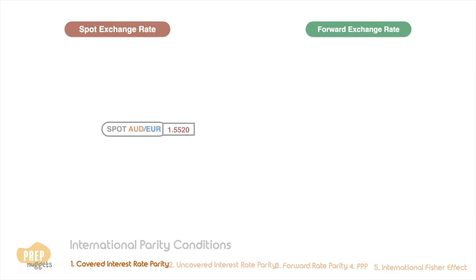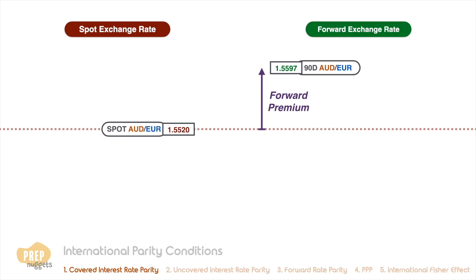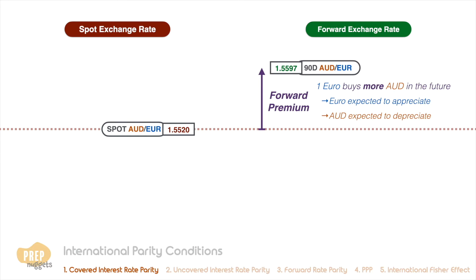In our last lesson we learned about forward rates. If the forward rate is higher than the spot rate, we say there's a forward premium. Since one euro can buy more AUD in the future, we expect the euro to appreciate against AUD and AUD to depreciate against the euro.